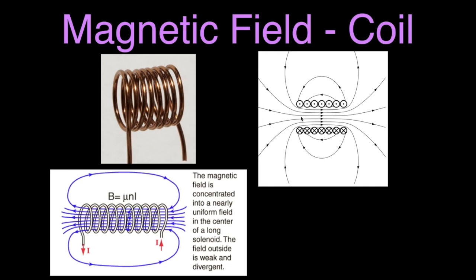Now we're back, and you can see the magnetic field inside that coil of wire pretty well. The magnetic field from a coil of wire is a vector quantity, so we have to know its magnitude and its direction. We'll do the direction in a separate video, and now I'm going to show you how we calculate the magnitude of the magnetic field.